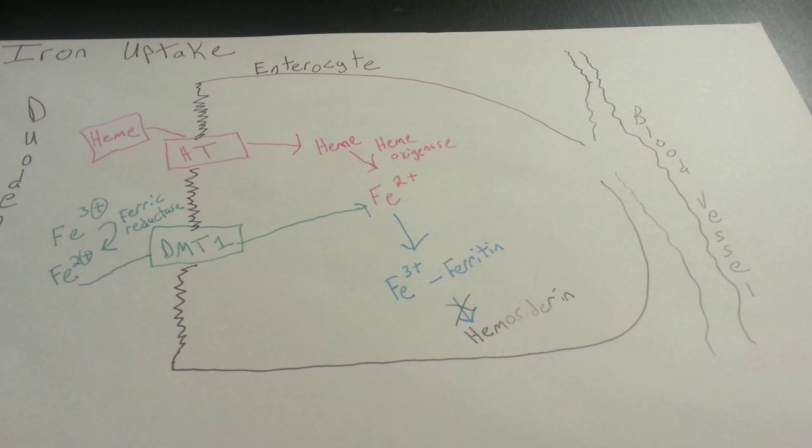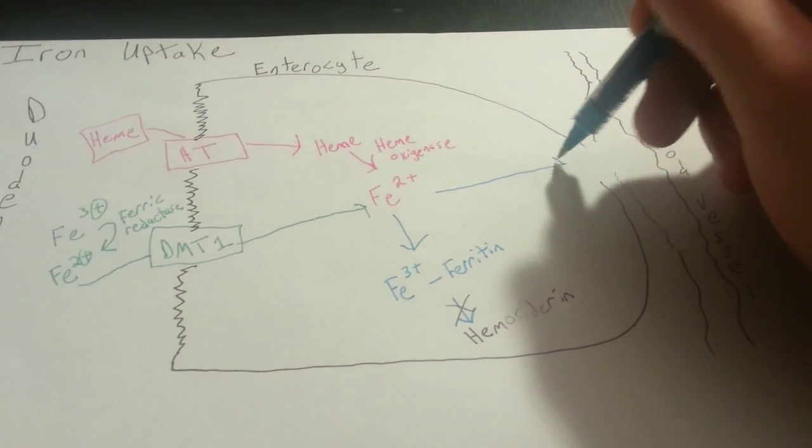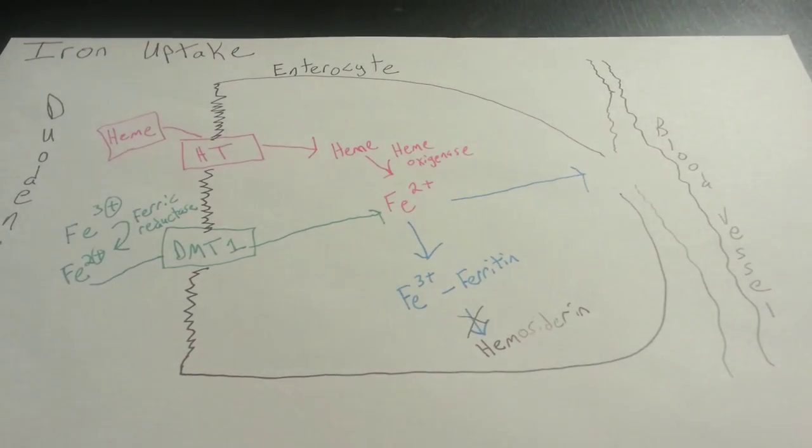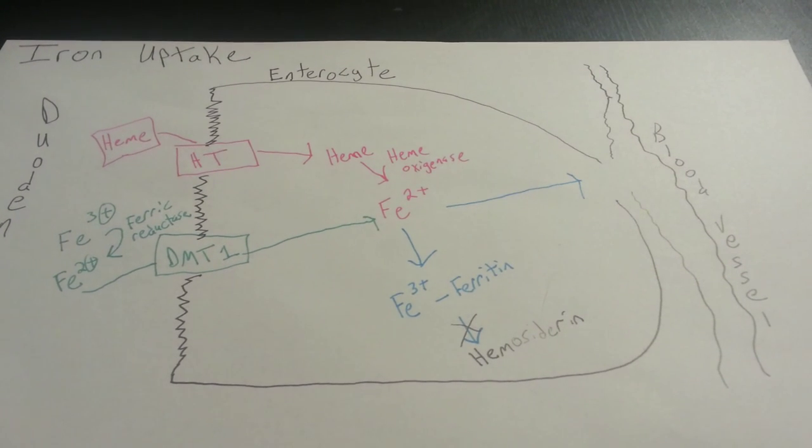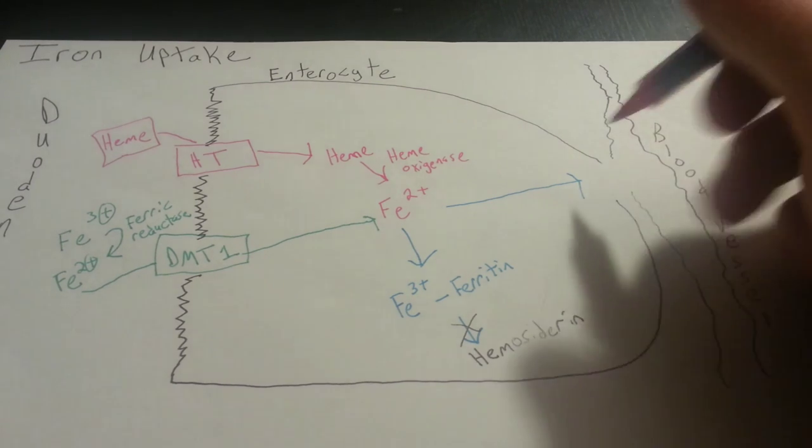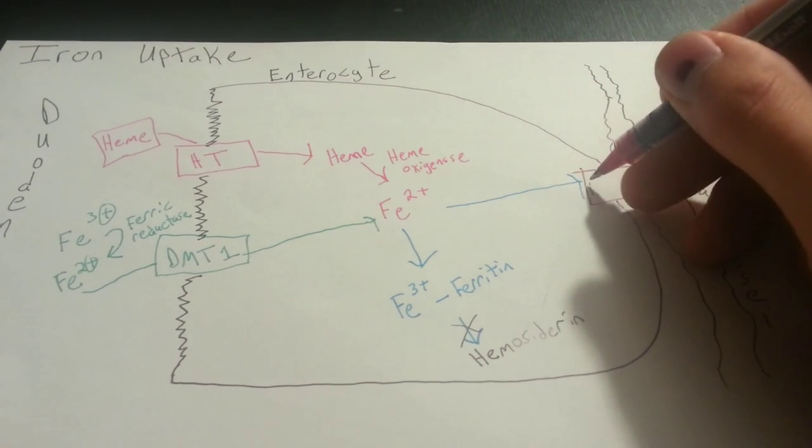Now, if we want to uptake iron directly into our blood, however, we can process it some more. But just like before, we want it back in its 3+ state, its oxidized state, rather than its 2+ state. So we need another set of transporters and another enzyme to change it from 2+ to 3+. So it's going to go through a transporter, and that transporter is called ferroportin.